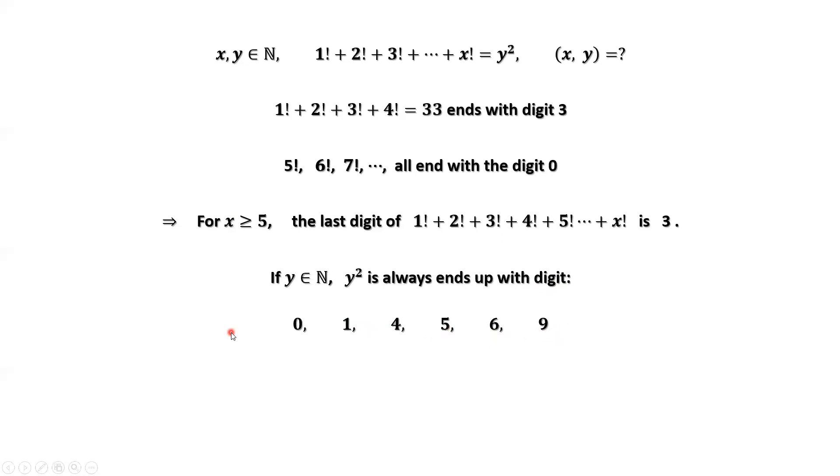For example, if the last digit is 0, 0 squared is 0. If last digit is 1, after squaring, the last digit is 1. Similarly, for 2, for 3, you can check. Here, we don't have an answer for digit 3.